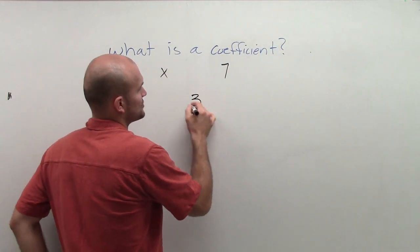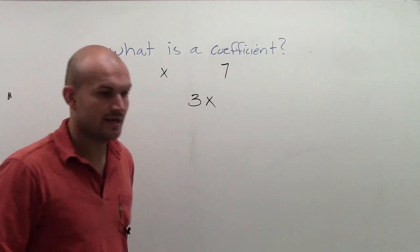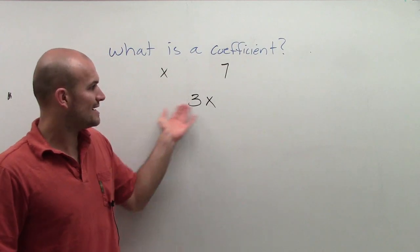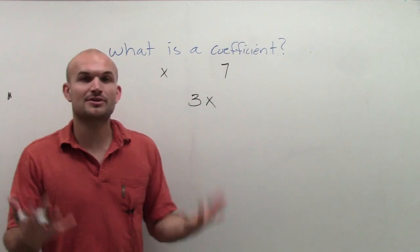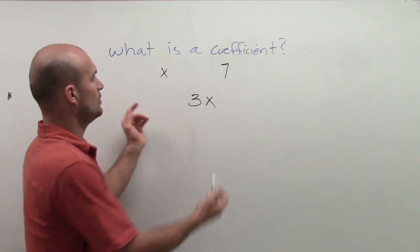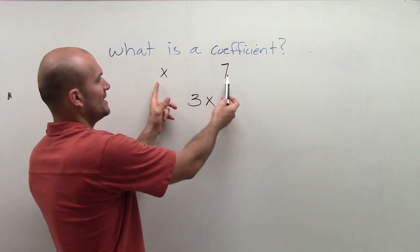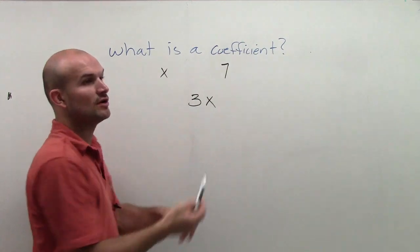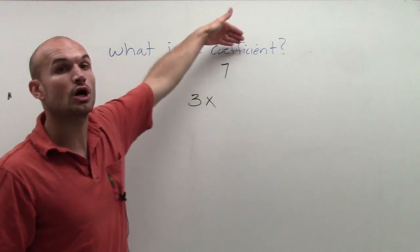But then what happens when we have a term that's like 3x, right? Well, it has a variable part of it, and it has a constant part of it. But there's another special part of when we combine a number and a variable together, we also now develop what the coefficient is.